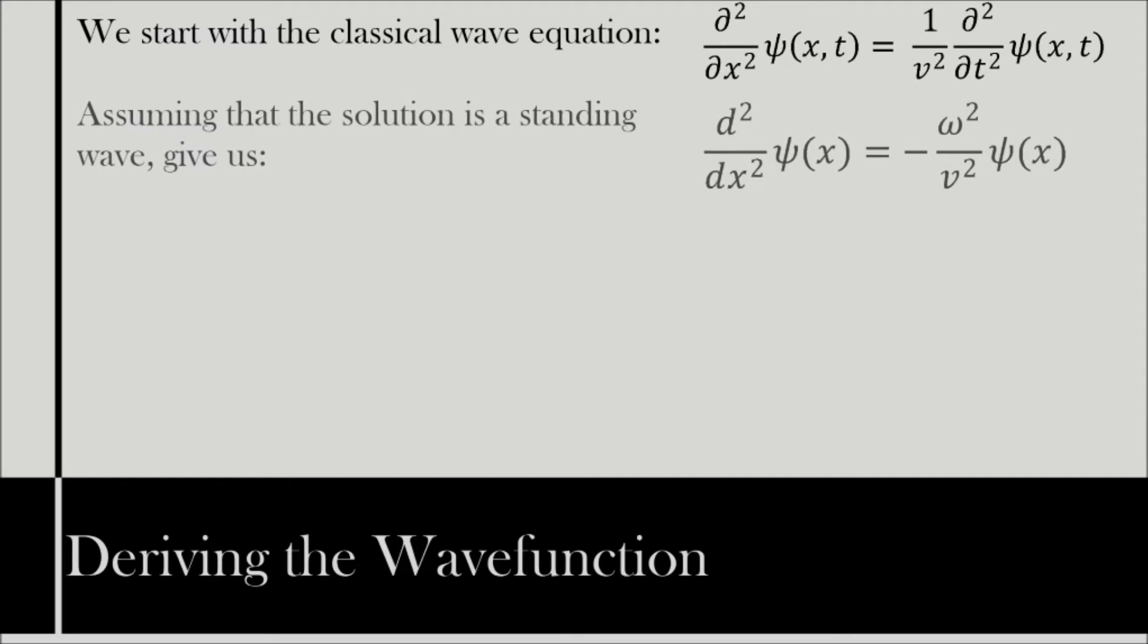Assuming that the solution is going to be a standing wave, then substituting the equation for a standing wave into equation 1, carrying out the differential and cancelling, we get second order differential with respect to x of ψ(x) equals minus ω² over v² times ψ(x).